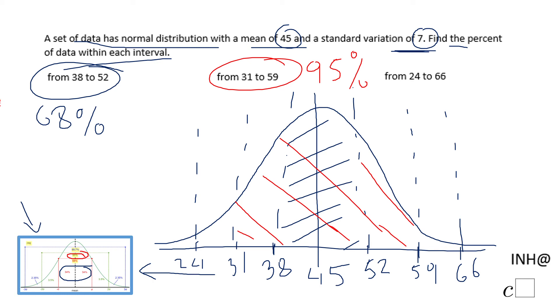And we have one more question, which says from 24 to 66, which is going to be almost the whole curve, right? That will be 99.7 percent of the data is between 24 to 66. And that's it.